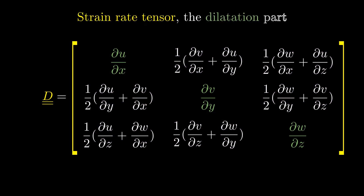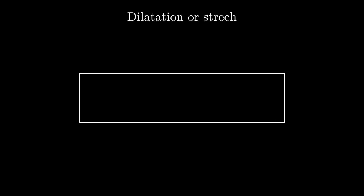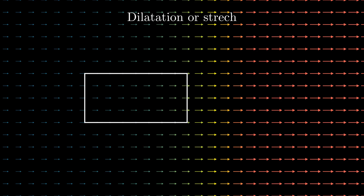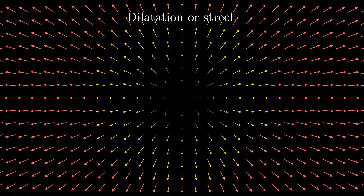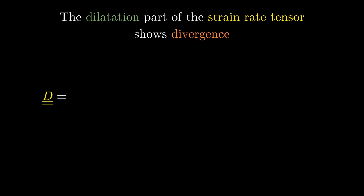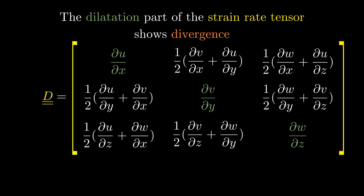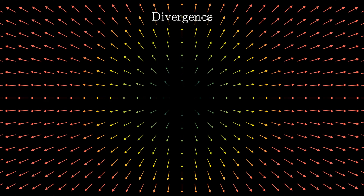We can understand the strain rate tensor better by looking at the dilatation part and the deformation part. The dilatation matrix entries cause stretching or dilating of the element — in a vector field, only the x component may be non-zero, or all dilatation components can be non-zero. In 3D, dilatation looks like a diagonal matrix. Another way to understand this is that the dilatation part of the strain rate tensor shows divergence — a measure for how much is flowing out of a certain area.